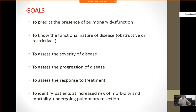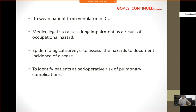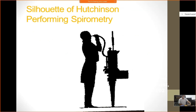We do PFTs to detect the presence of pulmonary dysfunction, to know the functional nature of disease — obstructive or restrictive — to assess severity and progression of disease, and to assess response to treatment. We also use PFT to identify patients at increased risk of morbidity and mortality undergoing pulmonary resection, and even before surgery we normally do PFT. PFT is also used to wean patients from ventilators in ICU, in medico-legal cases to assess lung impairment from occupational hazards or accidents, for epidemiological surveys, and to identify patients at perioperative risk of pulmonary complications. Spirometry was initially performed by Hutchinson.